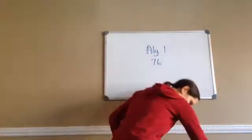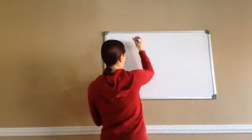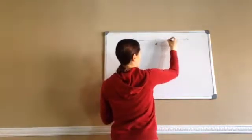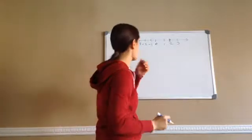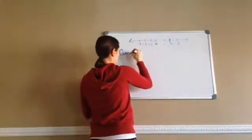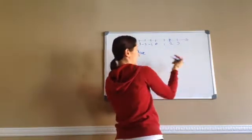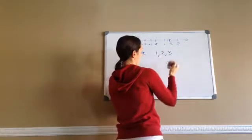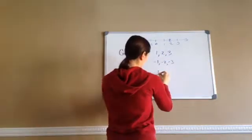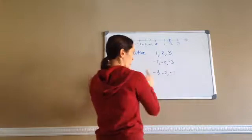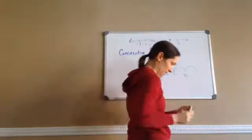Algebra 1, Lesson 76. This one is on consecutive integers. Integers are numbers that are on a number line. If we're talking about consecutive, consecutive integers means the numbers that come right after each other. So a consecutive run would be 1, 2, 3. Another would be negative 1, negative 2, negative 3, or negative 3, negative 2, negative 1. Those are consecutive — the number comes right after the next number. 0, 1 would be the next consecutive numbers.